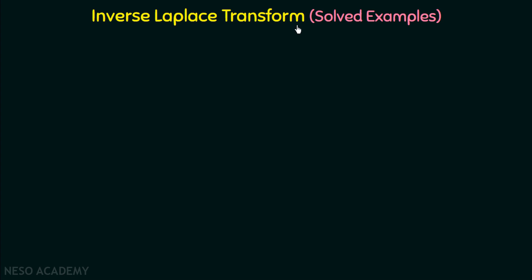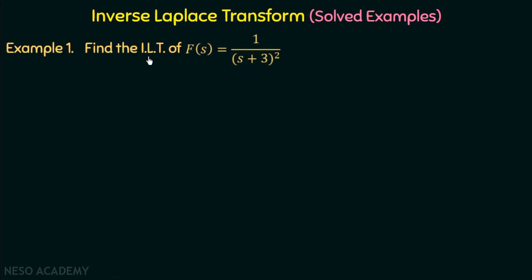We will understand these things with the help of some examples. Example 1: find the inverse Laplace transform of f equal to 1 over (s+3) whole square. We are given a frequency domain function and need to find the respective time domain function. If we observe this function, it looks like a frequency-shifted version of 1 over s square.